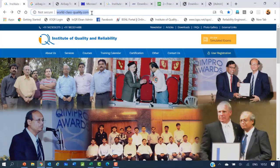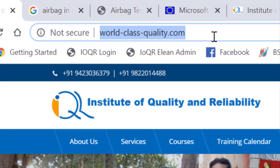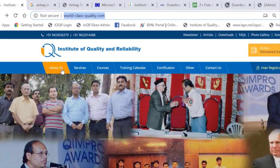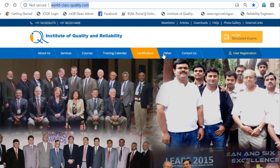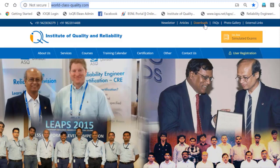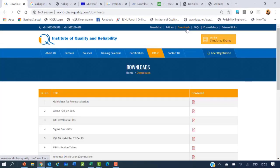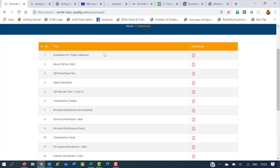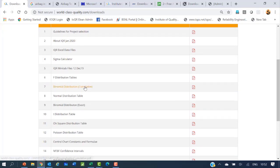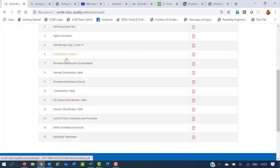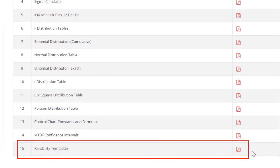This is the website of Institute of Quality and Reliability www.world-class-quality.com. You can see many links about us, courses, training calendar, certification, etc. You can click on downloads in the upper part of the website. You will see many links including various distribution tables and templates. Click on the templates which is probably somewhere on the lower side of the list to locate the link to Reliability templates and download.